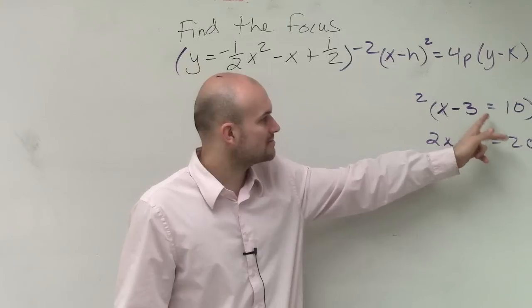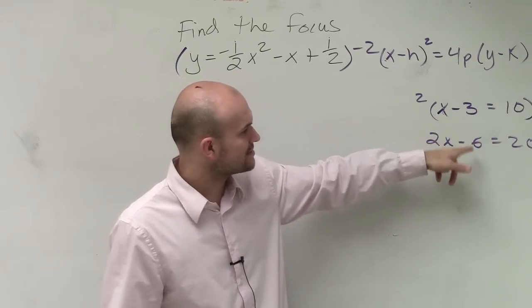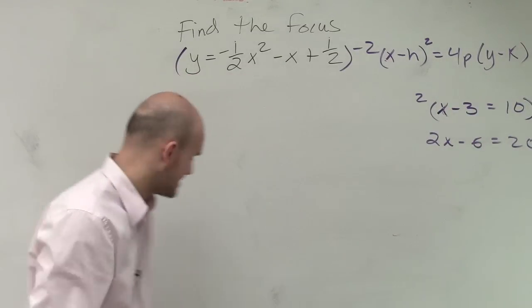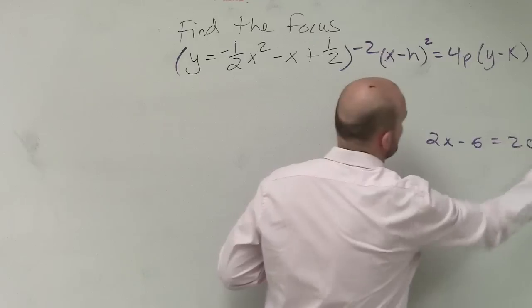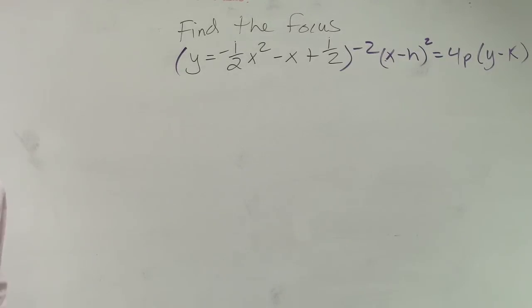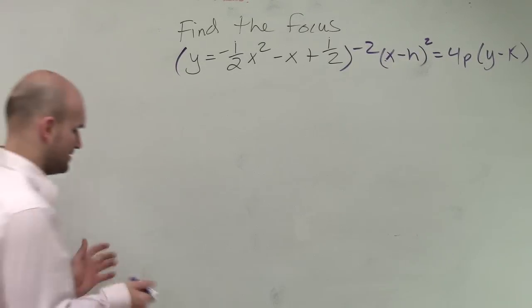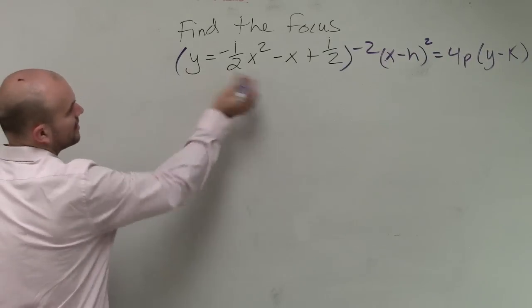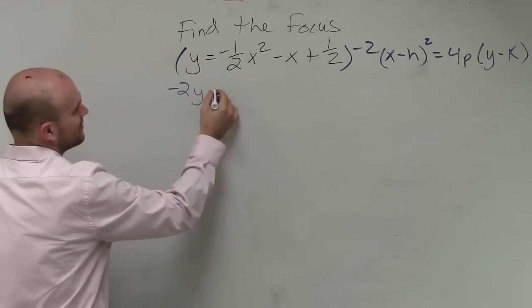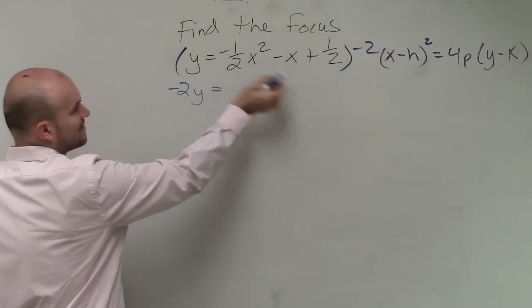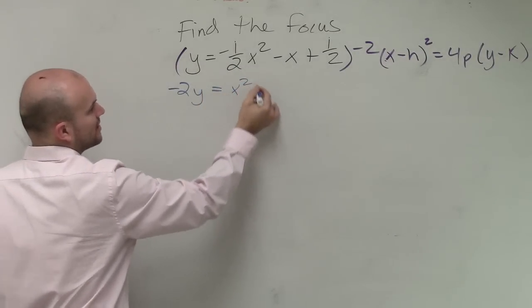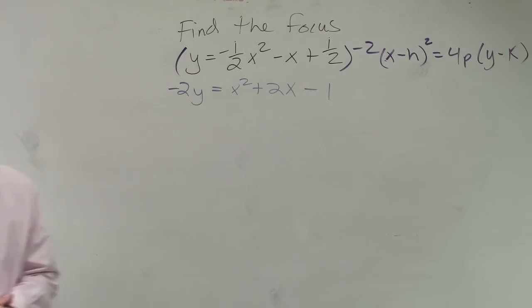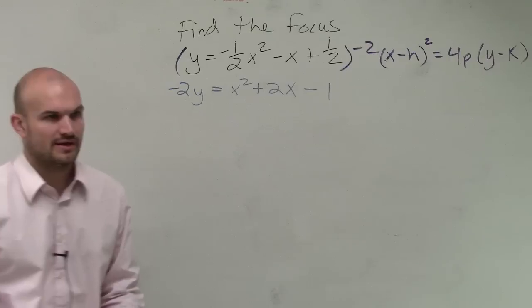So for this example, let's multiply everything. We'll have negative 2y equals negative 2 times negative one-half is just going to leave you with x squared plus 2x minus 1. Does everybody follow me right there? Okay. So now we have a trinomial.